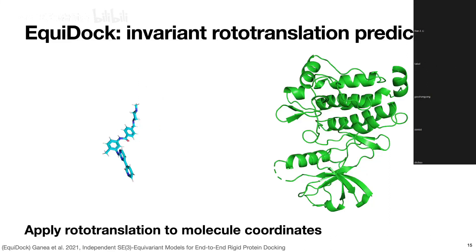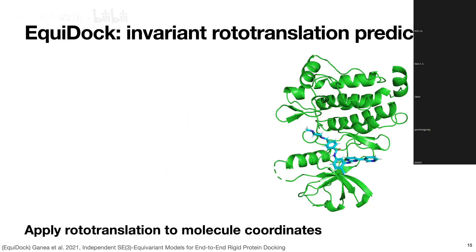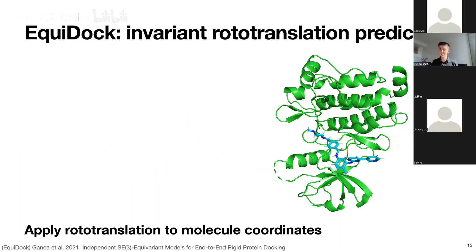We then apply this rotation and translation to the small molecule and end up with a final prediction that is independent of our initial placement.